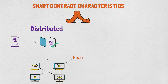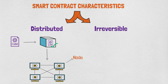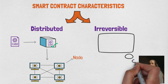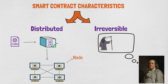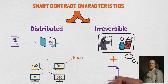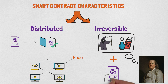The second characteristic is irreversibility. Benjamin Franklin once said that in the world nothing is certain except debt and taxes. Well, now there are smart contracts as well. Once the code is written, it cannot be changed. That means none of the parties is able to manipulate the code once it's executed, which makes smart contracts irreversible, and that is a pretty important characteristic.